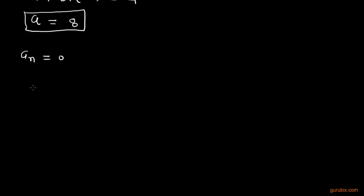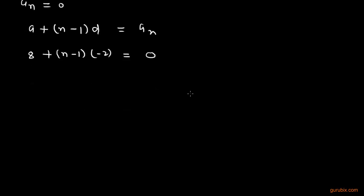Now we shall use the general term of the AP, and that is A plus (n minus 1) into D, and this is equal to A_n. And we are given A_n equals to 0. The value of A is 8. And we have to find out the nth term. And the nth term is equal to 5.